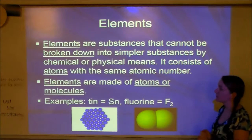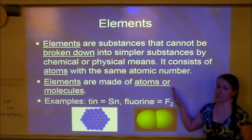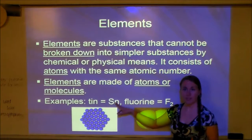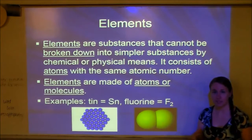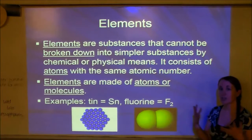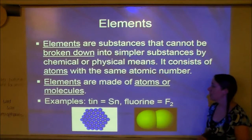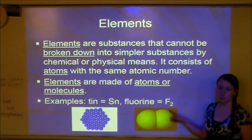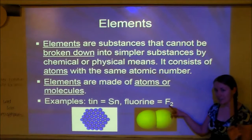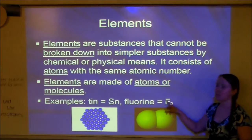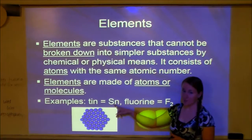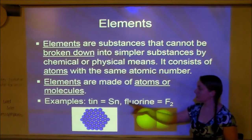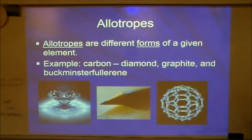Elements can be made of atoms or molecules. For example, tin (Sn) is just one thing, so tin is made of Sn atoms. Fluorine, on the other hand, exists as F2 — since there are two of them bonded together, it's a molecule. But because it's only made of F atoms, it's still just an element. So tin is made of Sn atoms and fluorine is made of F2 molecules.